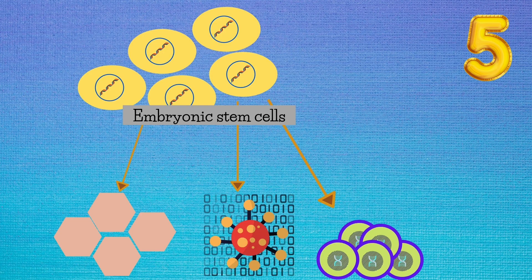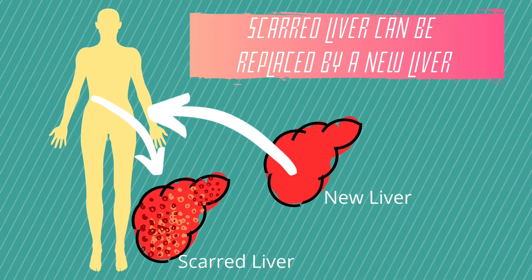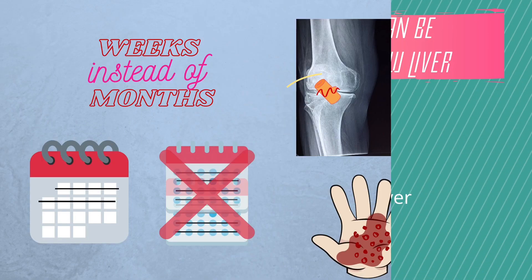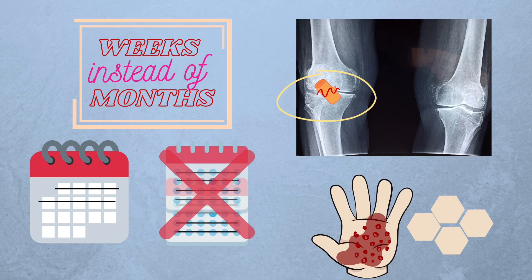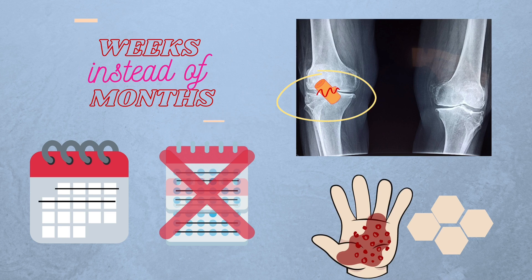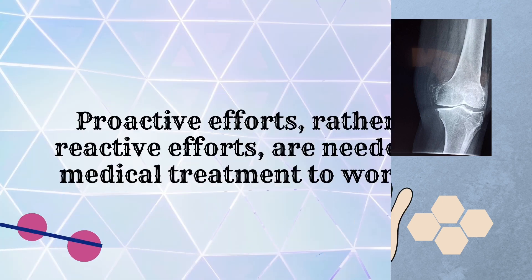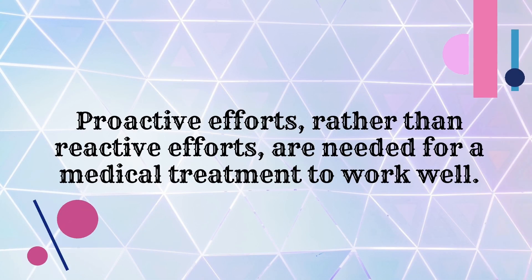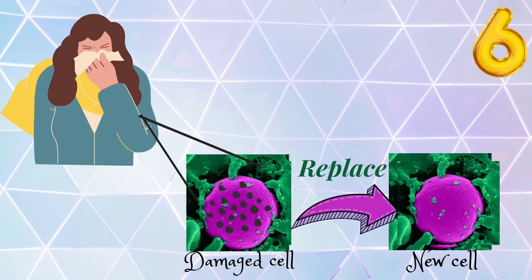Fifth, organs can be regenerated by therapeutic cloning. Embryonic stem cells can be transformed into specific types of tissues according to the needs of the patient. A liver scarred because of cirrhosis could be replaced by a new liver. An anterior cruciate ligament (ACL) could be corrected within weeks rather than months, as a new ligament can be affixed. New skin can be grown by skin grafts without leaving scar tissues.